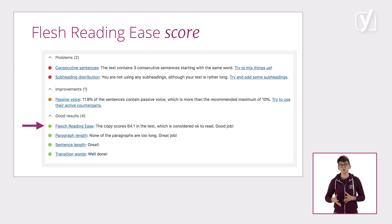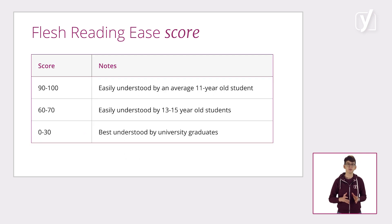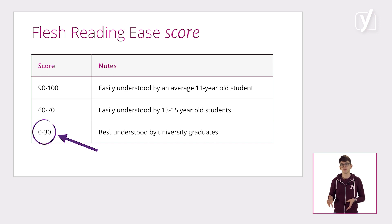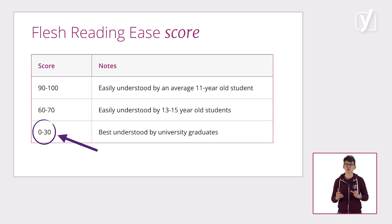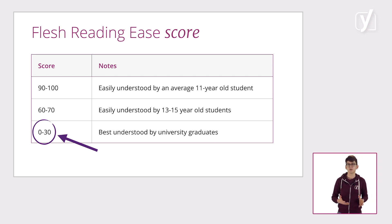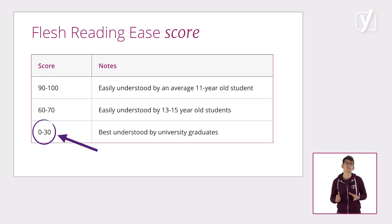Finally, we provide you with the Flesch Reading Ease score for your text. This score gives you a good indication of how understandable your text will be to a general audience. If the Flesch score is low, there are various things you can do: you can shorten your sentences to make them easier to understand, or you can choose simpler words to write about the topic in a clearer and more concise way.